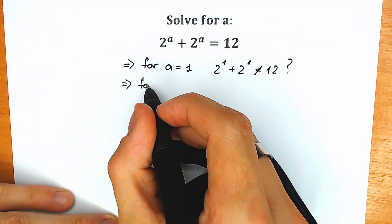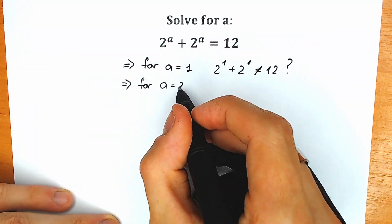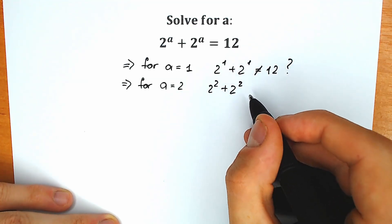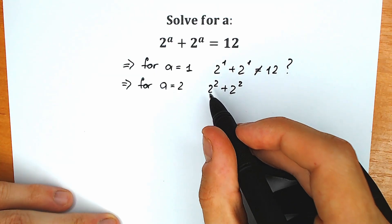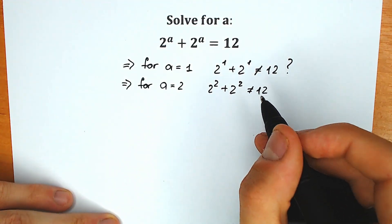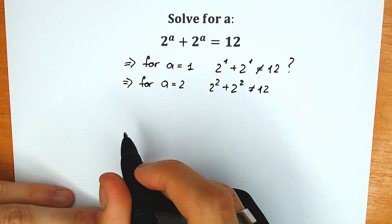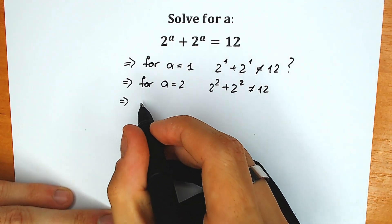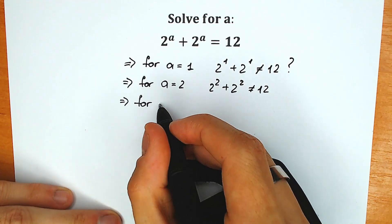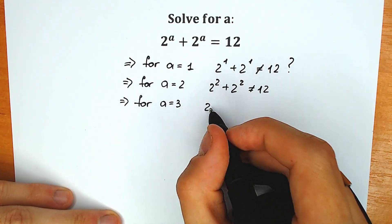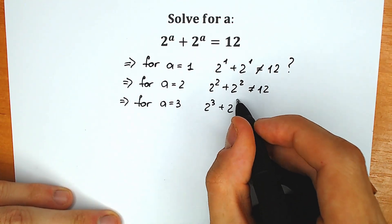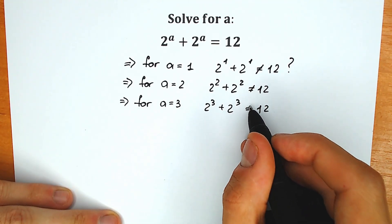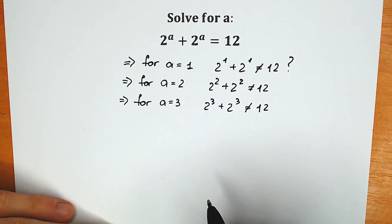Second case, for a equal to 2. We have 2 to the power 2 plus 2 to the power 2, and obviously this is not equal to 12 because we have 4 plus 4, which is equal to 8. And for a equal to 3, we have 2 cubed plus 2 cubed equal to 12. But 8 plus 8 is not equal to 12. So our inspection method is not a good method.